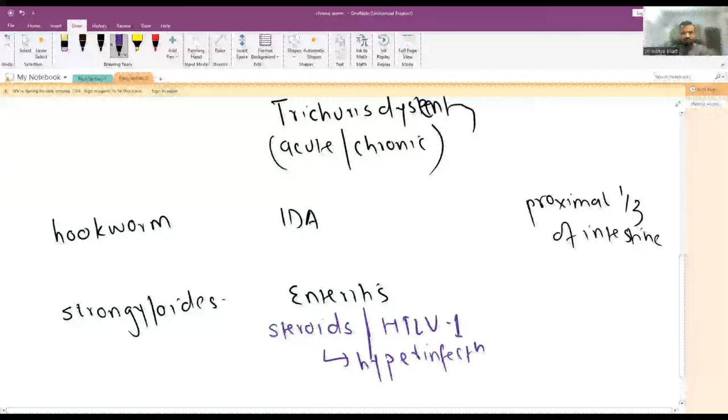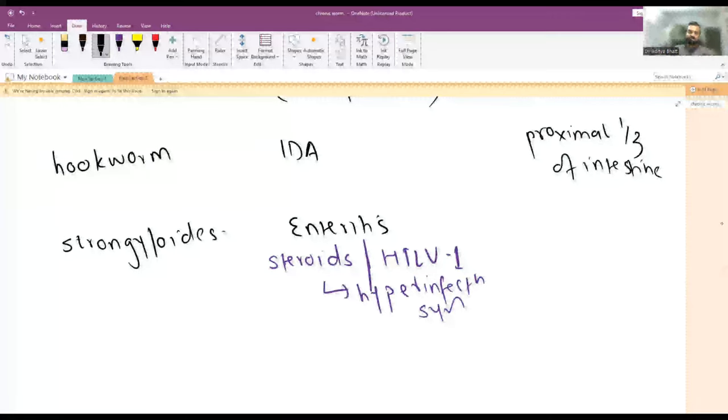The Strongyloides larvae or worms rampage throughout the body and wreak havoc and may lead to multi-organ dysfunction syndrome. Strongyloides are usually found in the duodenum and jejunum only.